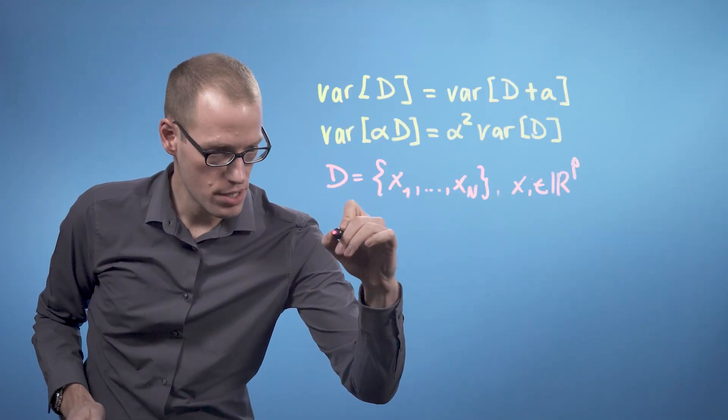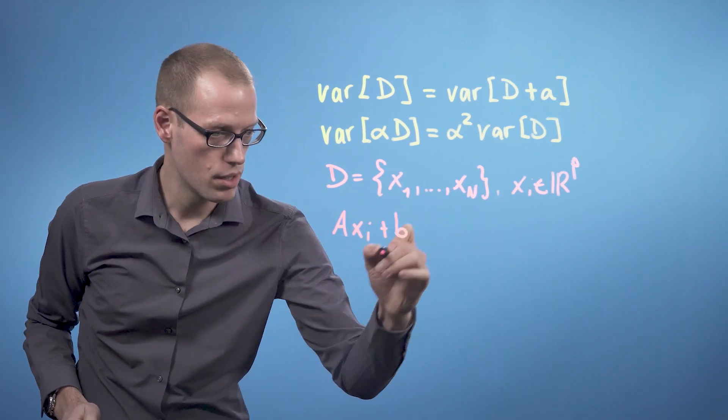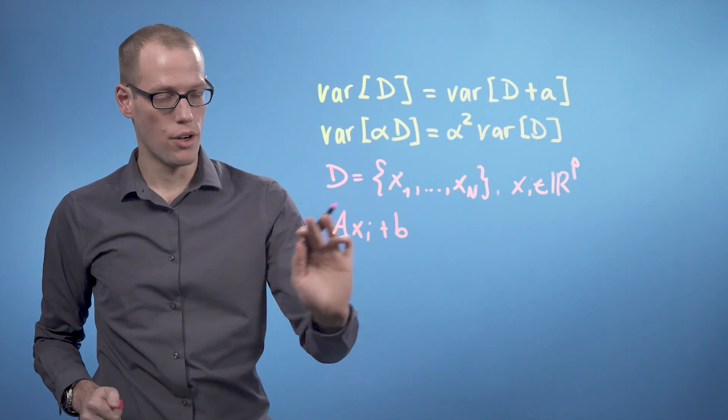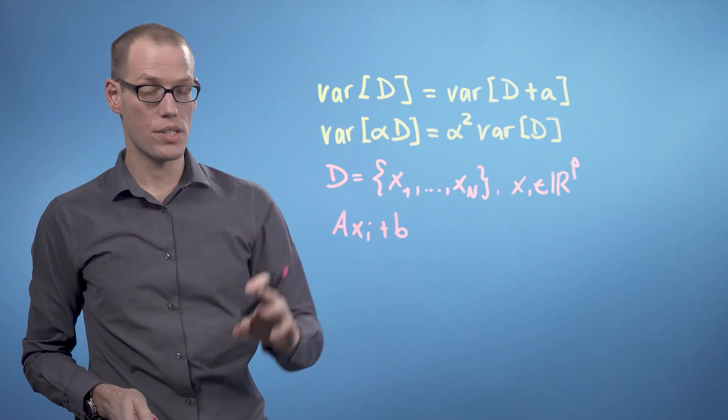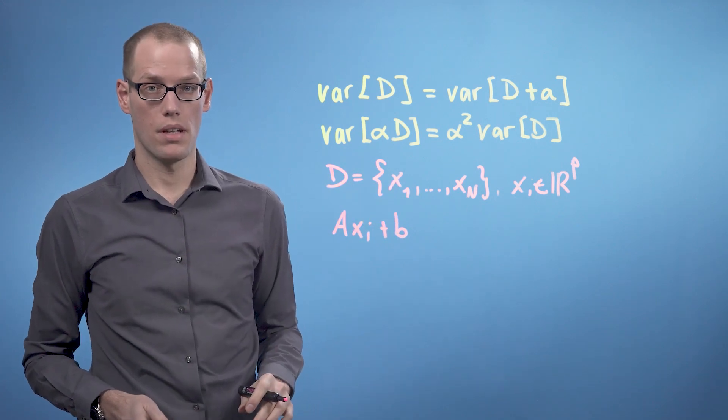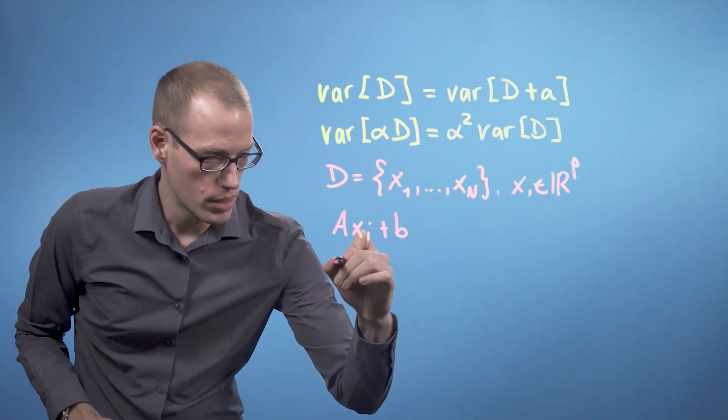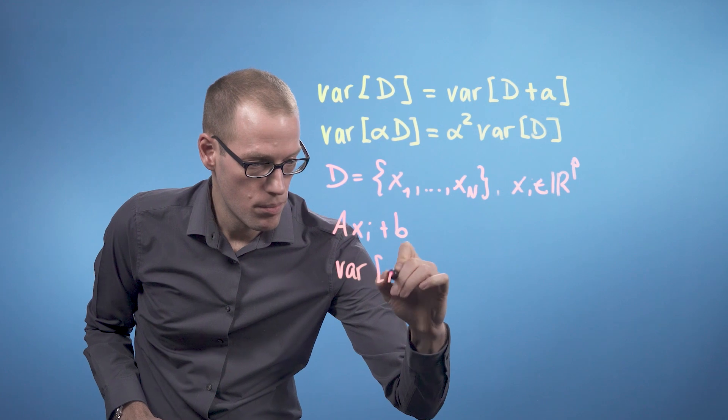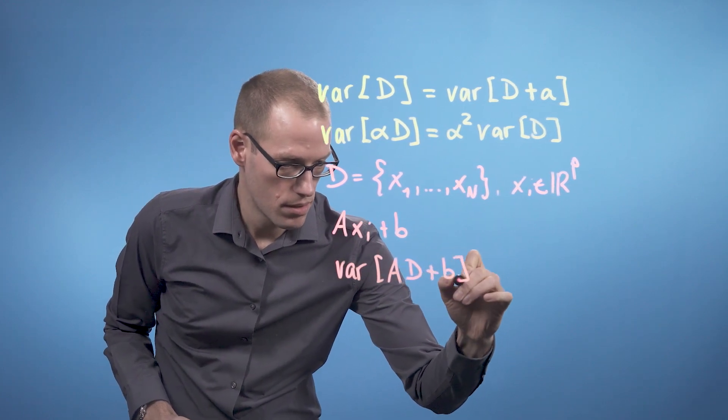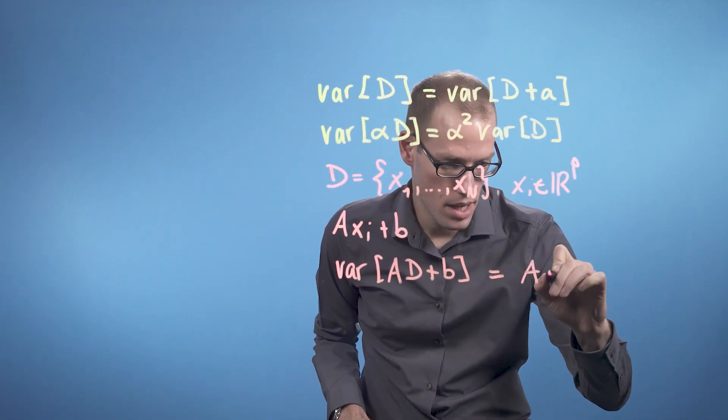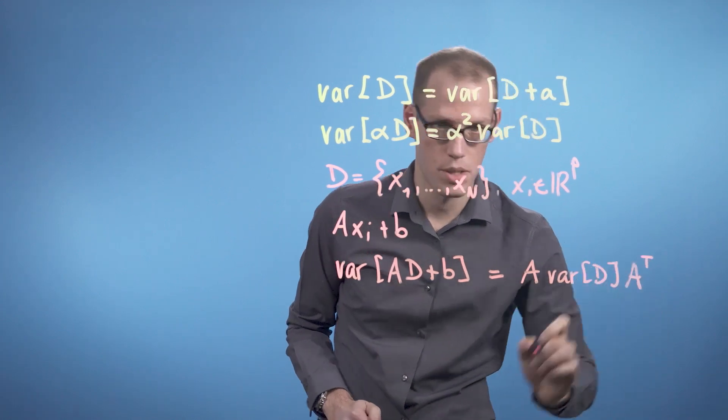If you perform a linear transformation of every data point, say Axi plus b for a given matrix A and an offset vector b, the question is what happens to our data set if we do this to every single data point? Well, we get the covariance matrix of the transformed data set as follows. We get the variance of A times D plus B is A times the variance of D times A transpose.